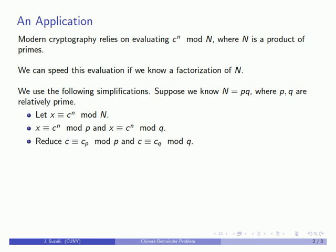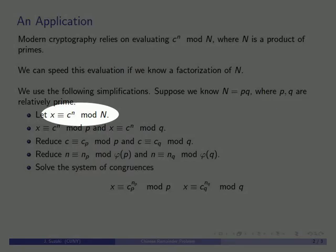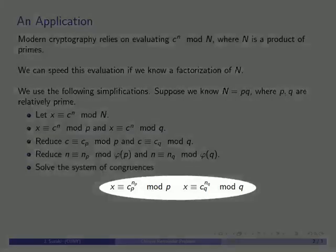I might be able to reduce c mod p and mod q. Also that exponent can be reduced because of the Euler-Fermat theorem that any number to the phi of the modulus is going to be congruent to 1. So I can reduce the exponent to some lower value in both cases. My original congruence now becomes two congruences where I'm dealing with much smaller numbers.